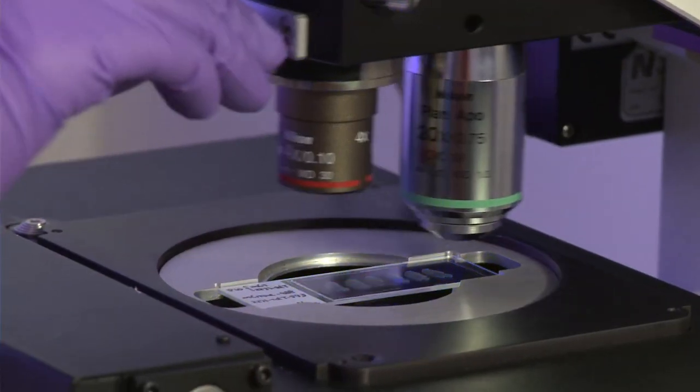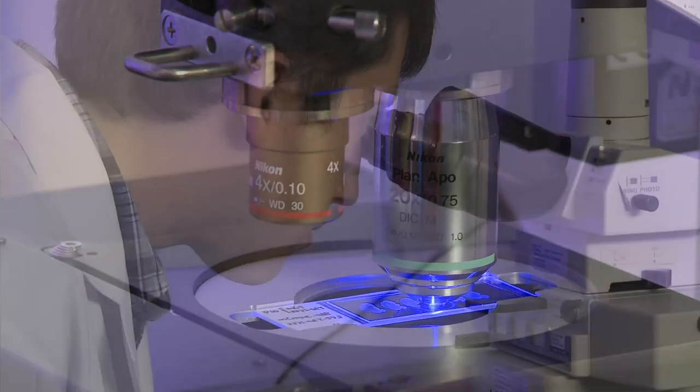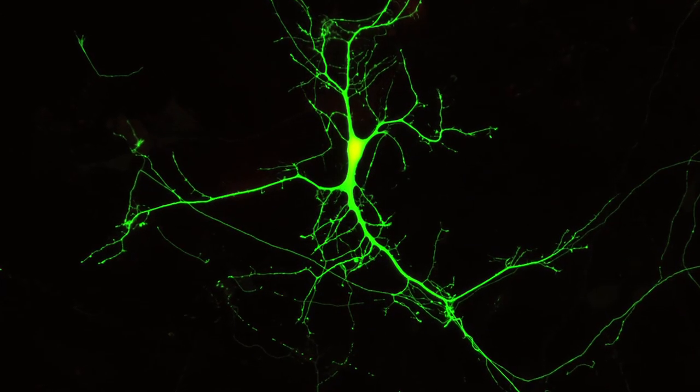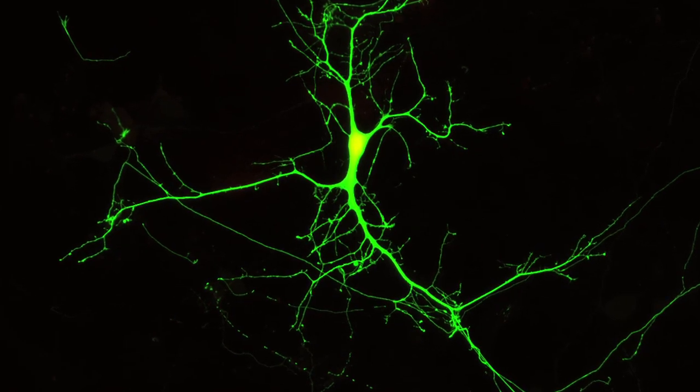For hundreds of years, microscopists have been trying to look at biology. Typically, you can take a glass lens and magnify the light coming from a sample and you get an image that's bigger, and so you can see it. But there's a problem. All of these existing microscopy methods are limited.